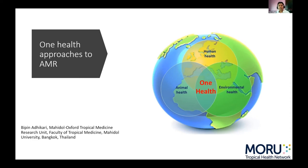The major question is: why should we be concerned about animal health and environmental health? Why can't we focus on human health alone? Because antimicrobials are widely used in sectors other than human health — including animal health and husbandry, agriculture, and food production. Increasingly over the years we've seen air, water, and environmental pollution, and the environment acts as a reservoir for resistant organisms, which can come back to humans.